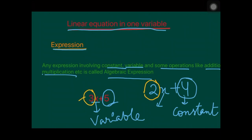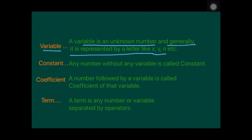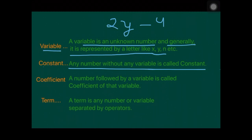The multiple of the variable is known as the coefficient. So this is called the coefficient. The variable is an unknown number and is generally represented by a letter like x, y, and so on. A number without any variable is called a constant. For example, in 2y minus 4, the variable is Y and the constant is 4.